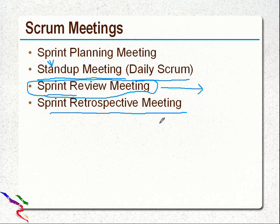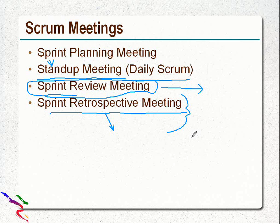The sprint retrospective meeting is basically to understand what went well, what didn't go well, what should be improved, and what are the lessons learned. This is the portion where lessons learned are recorded and productivity hurdles are reported so they do not happen in the next sprint. The basic purpose is to continuously improve the effectiveness of Scrum.